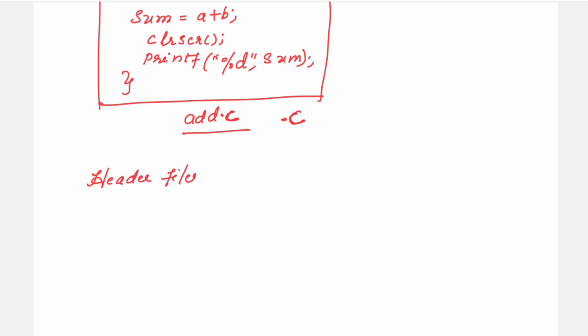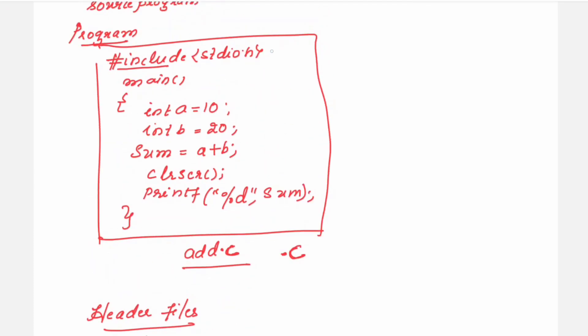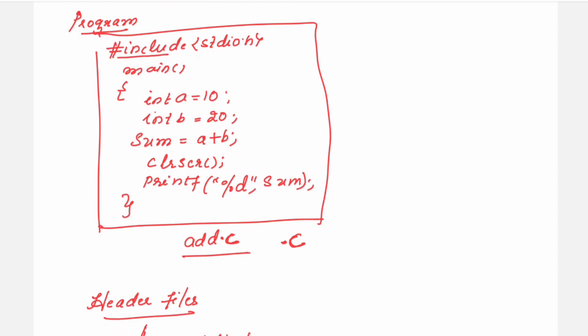Now which header files are there? The first one, you can write it as stdio.h. Now this stdio.h, normally you might have seen that here I have written include stdio.h. So all header files will get included using the hash include preprocessor.